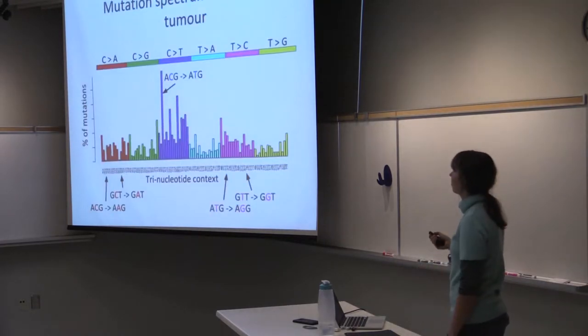We can point out six main types of mutations. Those are C2A, C2G, C2T, and so on.